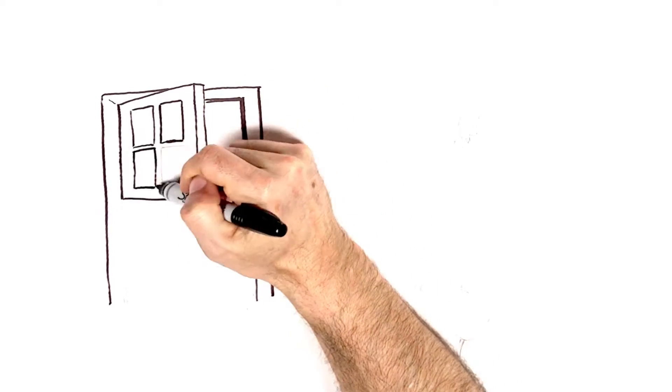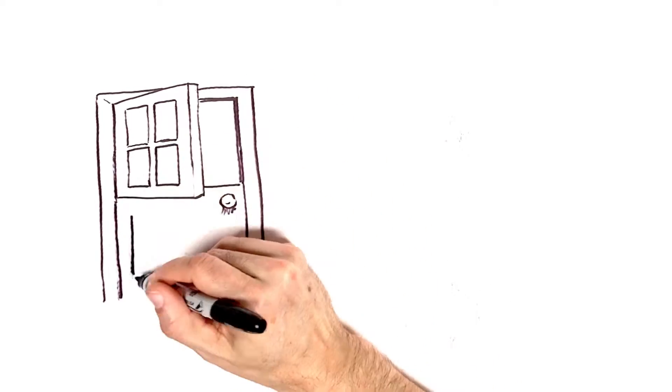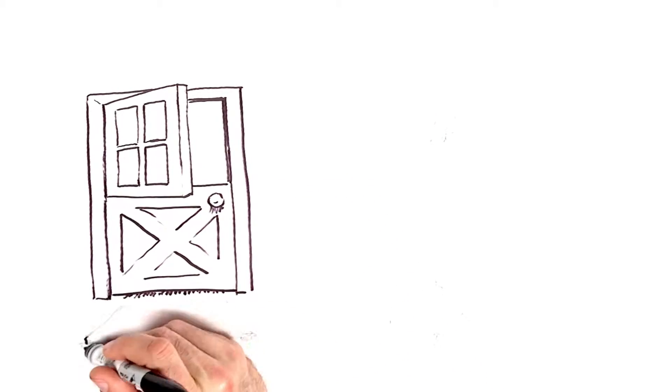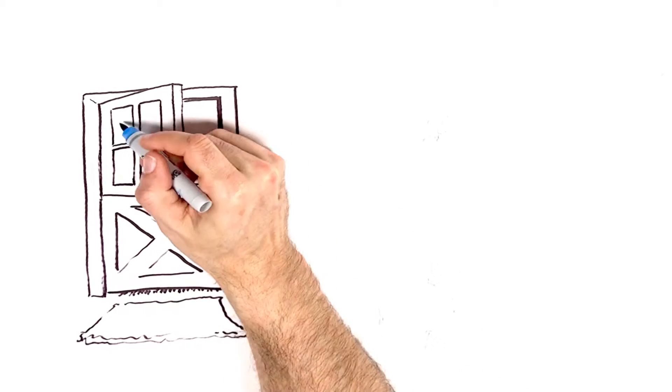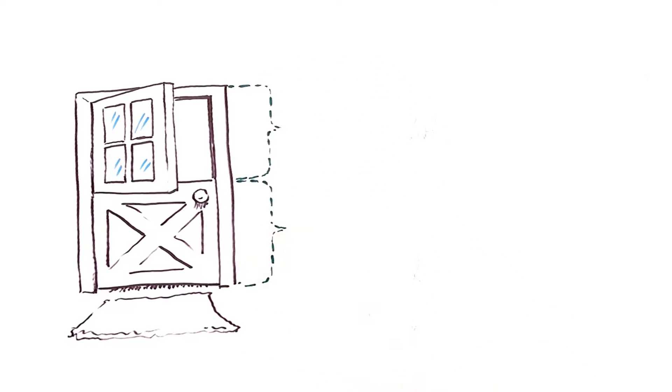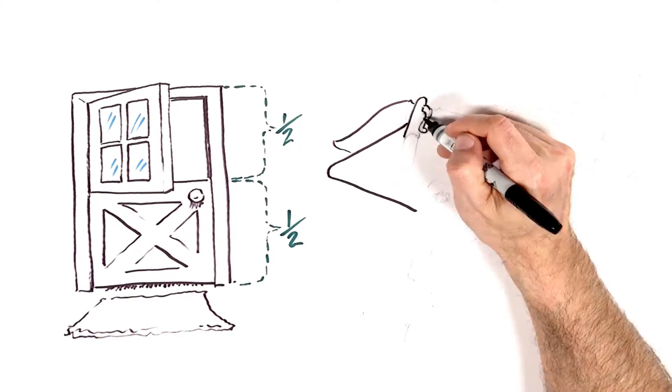The idiom going Dutch is said to refer to the Dutch-style door, which has two equal halves divided horizontally. Leaving the top half open could let light and air in, while keeping wind-blown dirt and curious animals out.